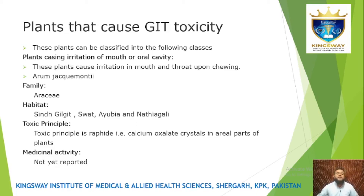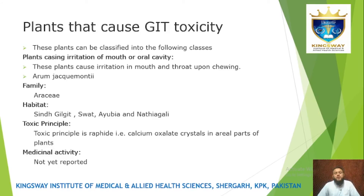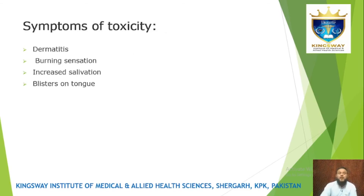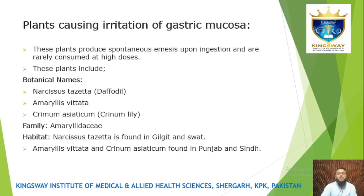Arum jacquemontii is a plant whose family is Araceae. In Pakistan, it is found in Sindh, Gilgit, Swat, Ayubia, and Nathiagali. Its toxic principle is calcium oxalate crystals. The aerial parts of the plant are used. Medicinal activity has not been recorded. Symptoms of toxicity include dermatitis, burning sensation, increased salivation, and blisters on the tongue.